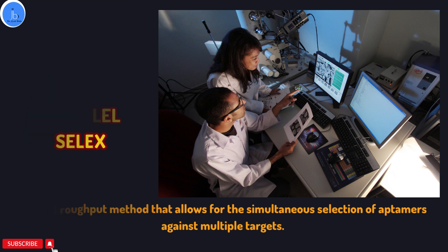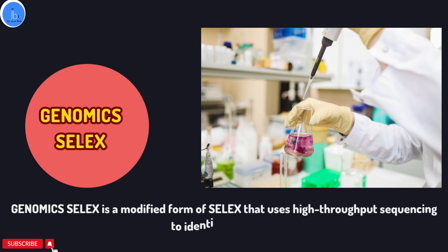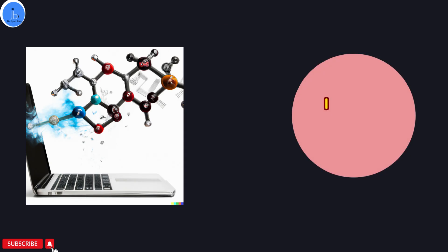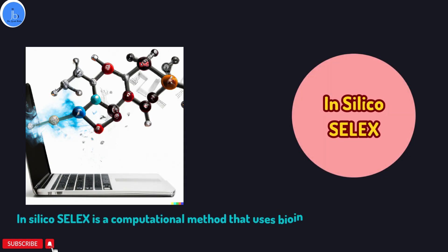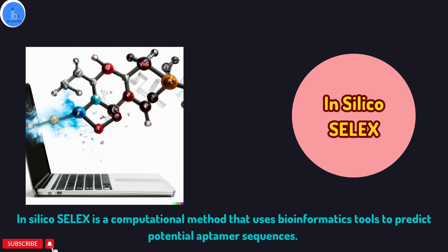Another significant type is Genomic SELEX, a modified form of SELEX that uses high-throughput sequencing to identify aptamers. In Genomic SELEX, the nucleic acid library is sequenced after each round. Next is In Silico SELEX, a computational method that uses bioinformatics tools to predict potential aptamer sequences. The target molecule is first docked with a library of virtual nucleic acid sequences, and sequences with the highest binding affinity are selected for further analysis. In Silico SELEX helps reduce the time and cost associated with experimental SELEX by identifying potential aptamer candidates before starting the selection process.